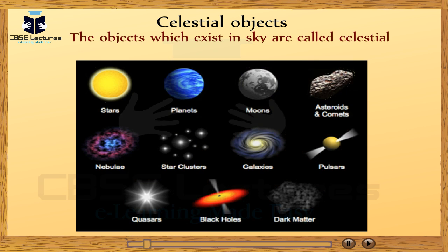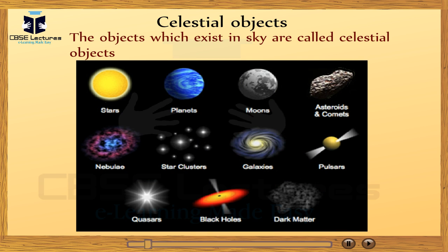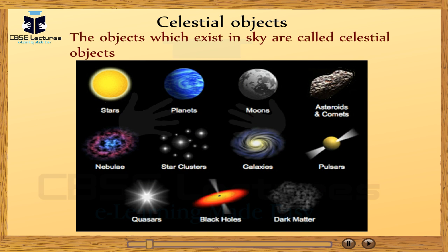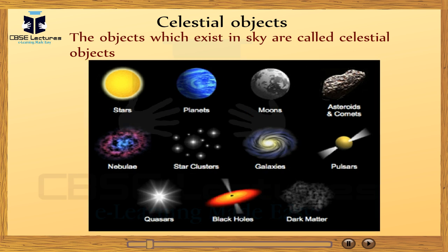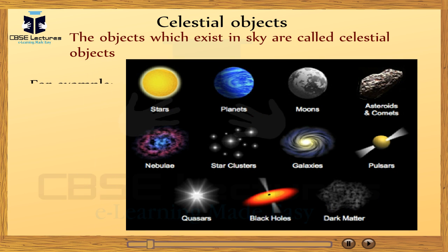Celestial bodies are also known as heavenly objects. Which are the common celestial objects you see daily? Stars, moon, planets, etc. Very good.